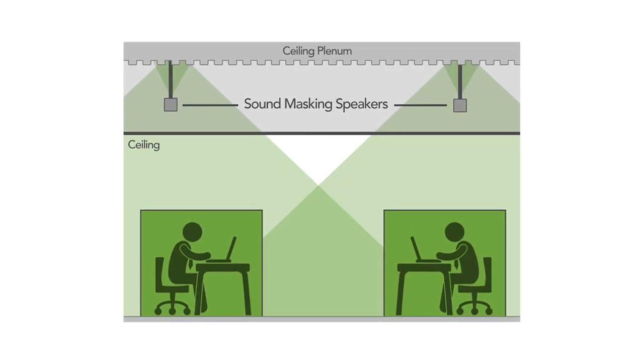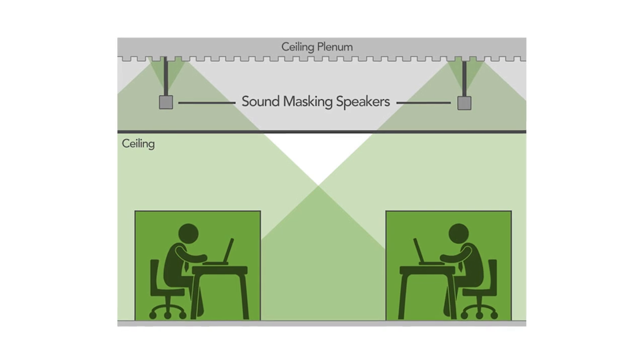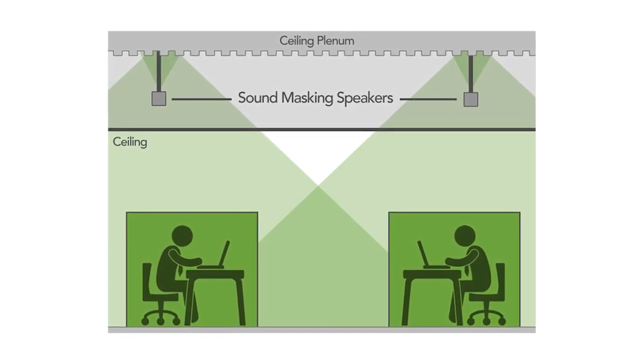Dispersion is really key, so directional speakers aren't going to work — a horn speaker isn't going to do the right job. What type of loudspeakers and how do we need to place them within the room? It ultimately depends on whether you're on a direct field system, where you use a type of speaker that goes into the ceiling — those need to be on the correct centers according to the dispersion and room height. If you're on a plenum system, where speakers are above the ceiling with perforated metal tiles, you need to bring them in closer. If it's mineral tile you need to take it out further. If it's an open ceiling you need to consider where the speakers go.